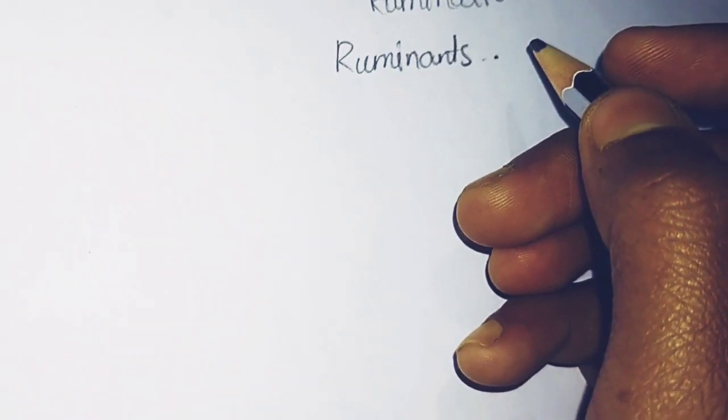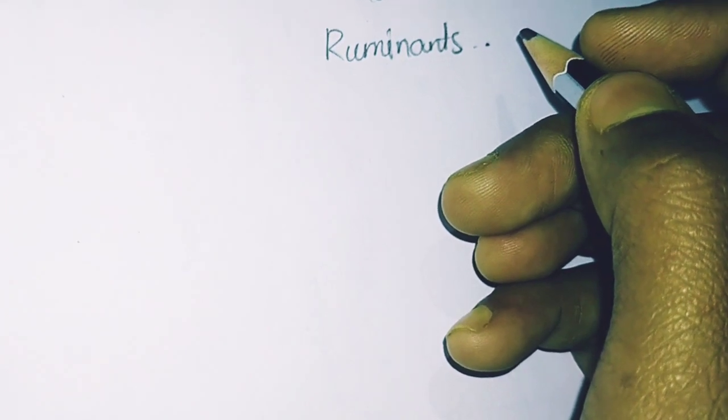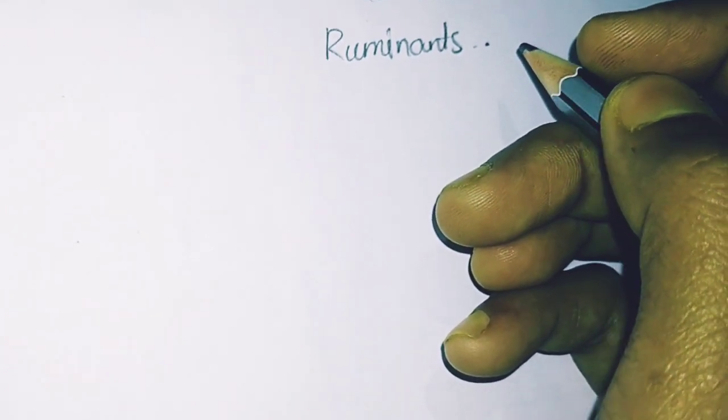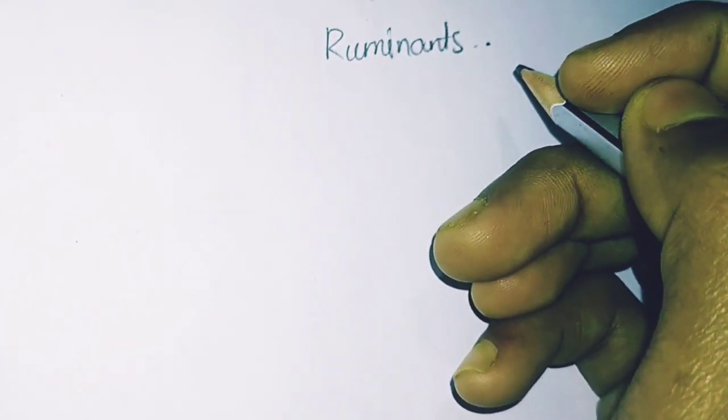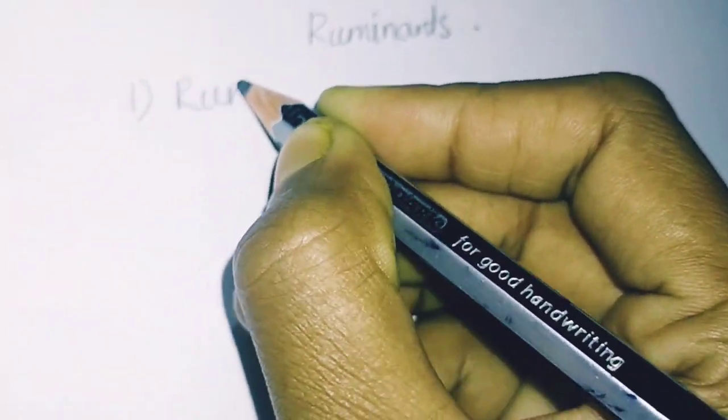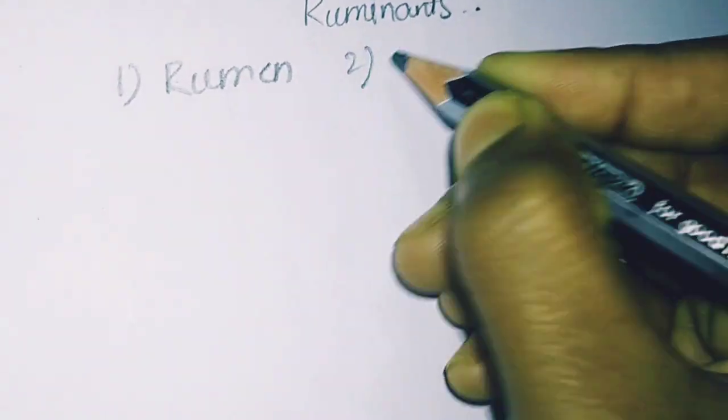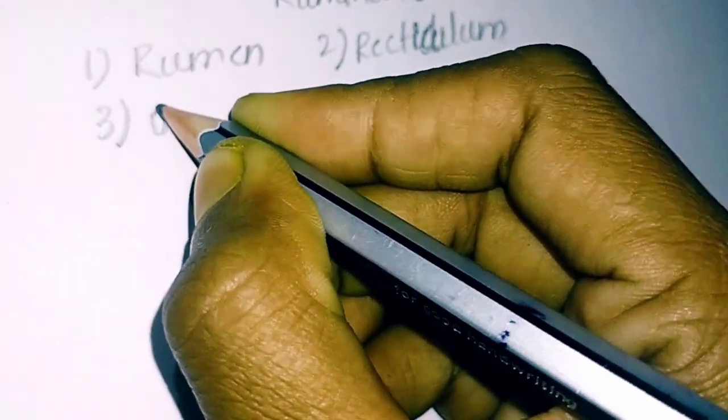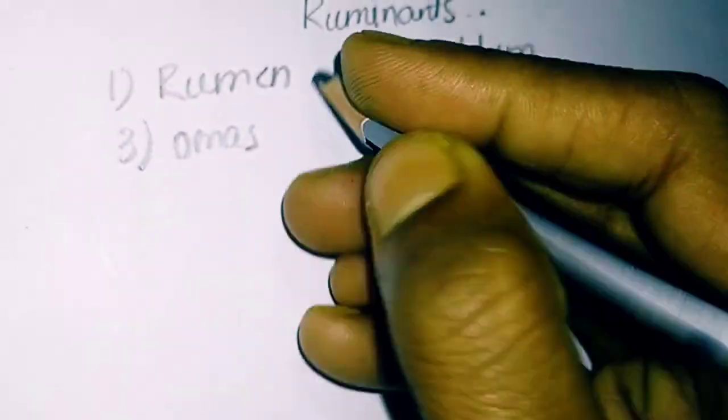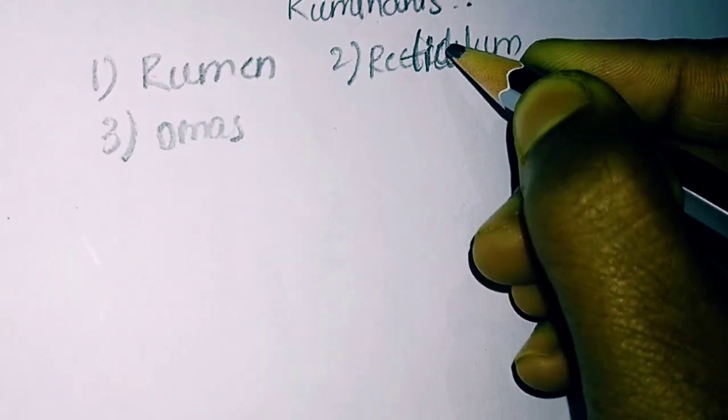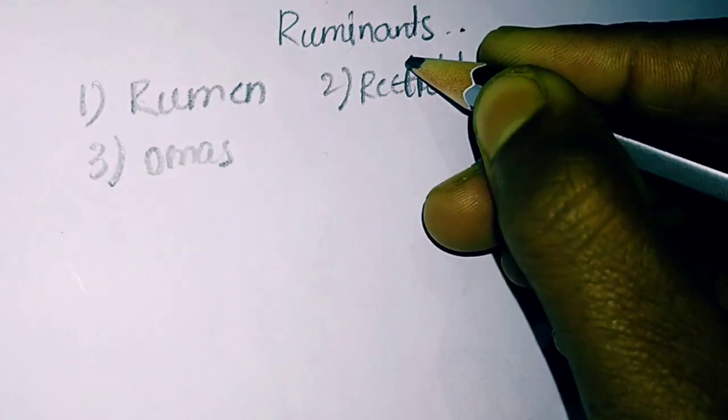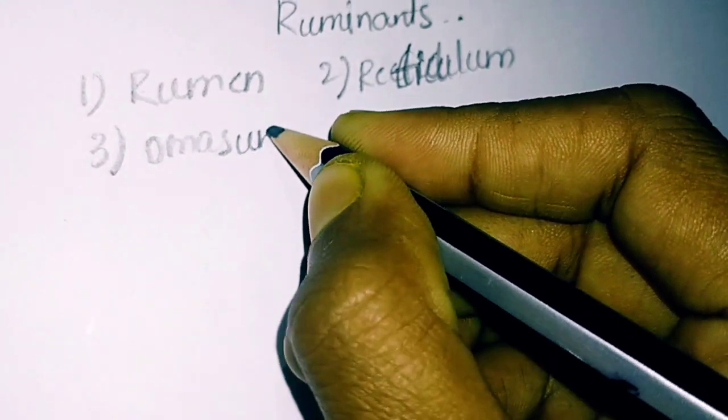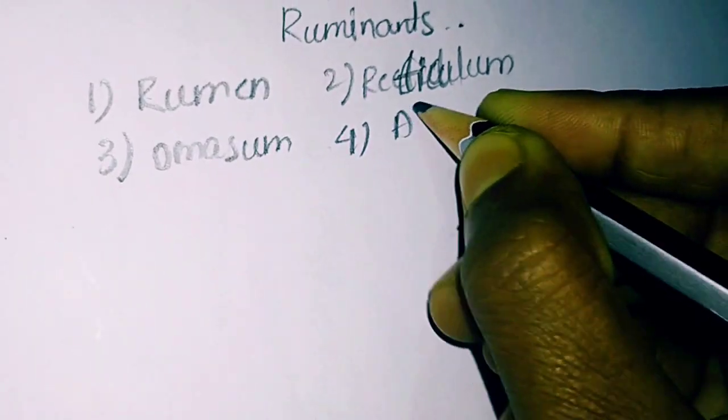In order to allow the food to be chewed twice, the stomach of the ruminants is complex and is divided into four chambers: one is rumen, second one is reticulum, third one is omasum, and the fourth one is abomasum.